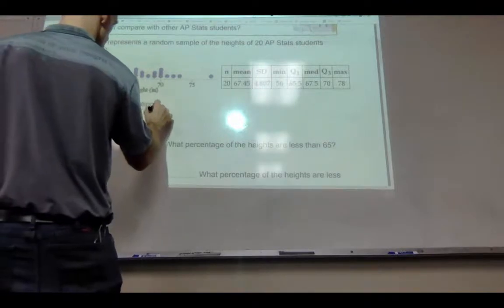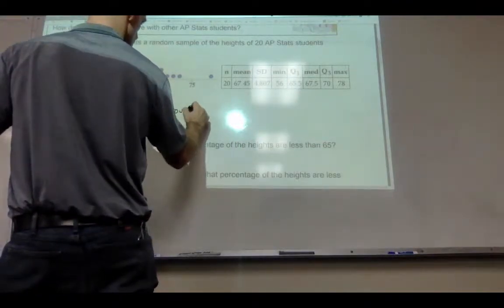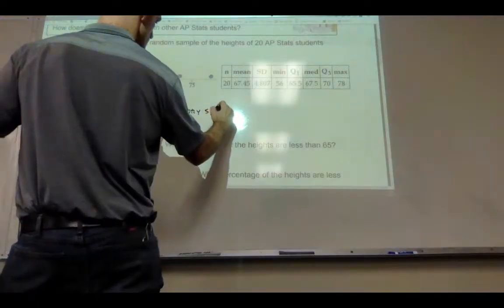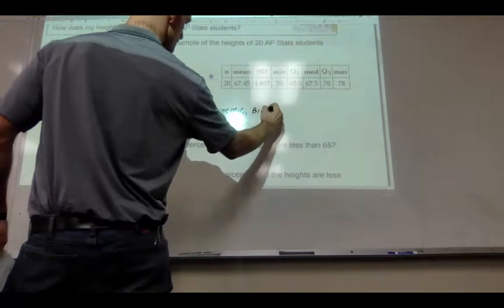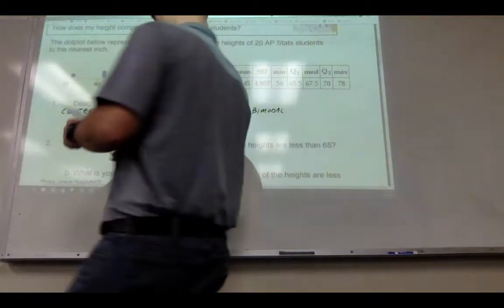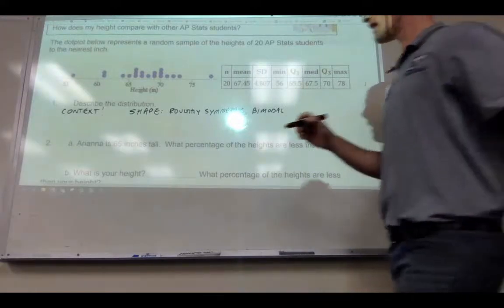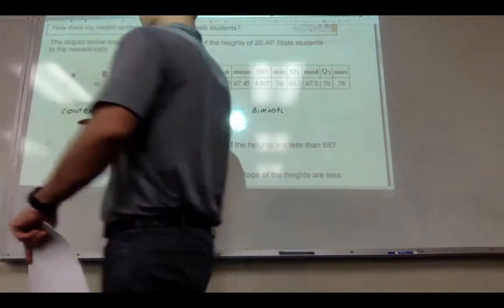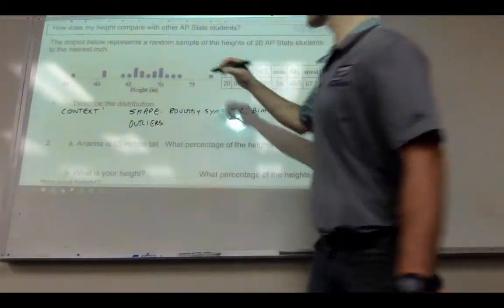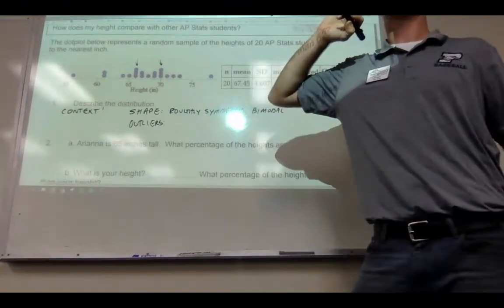Shape. You should have said something about it being roughly symmetric and bimodal. Okay, so roughly symmetric and bimodal. Outliers. So the cool thing about this is bimodal means there are two most common values. So two modes. Two most common values.